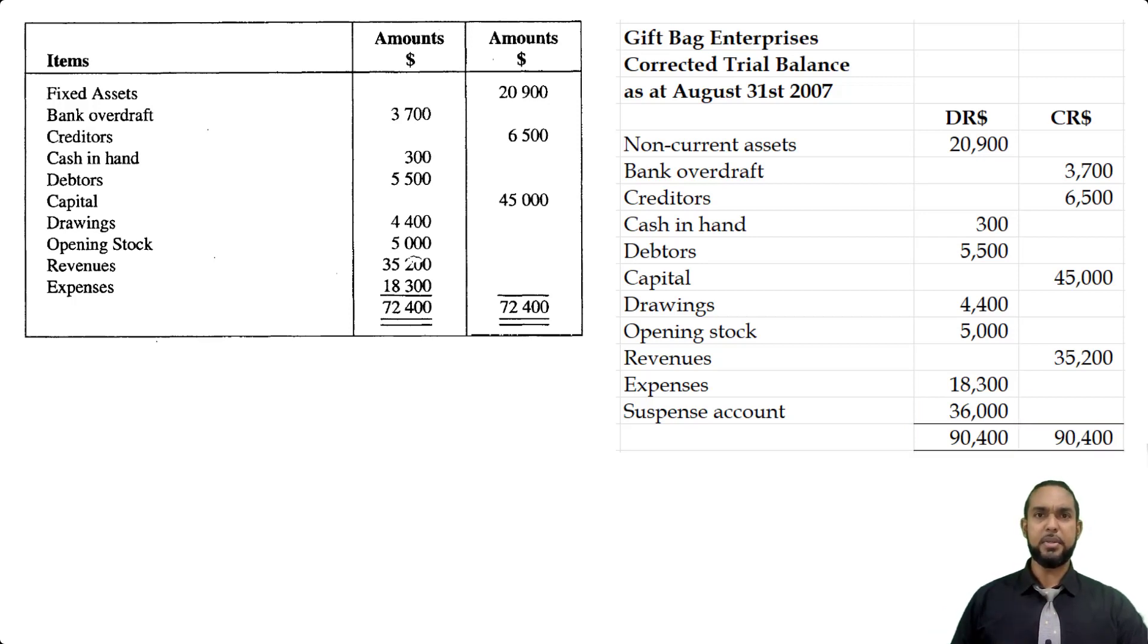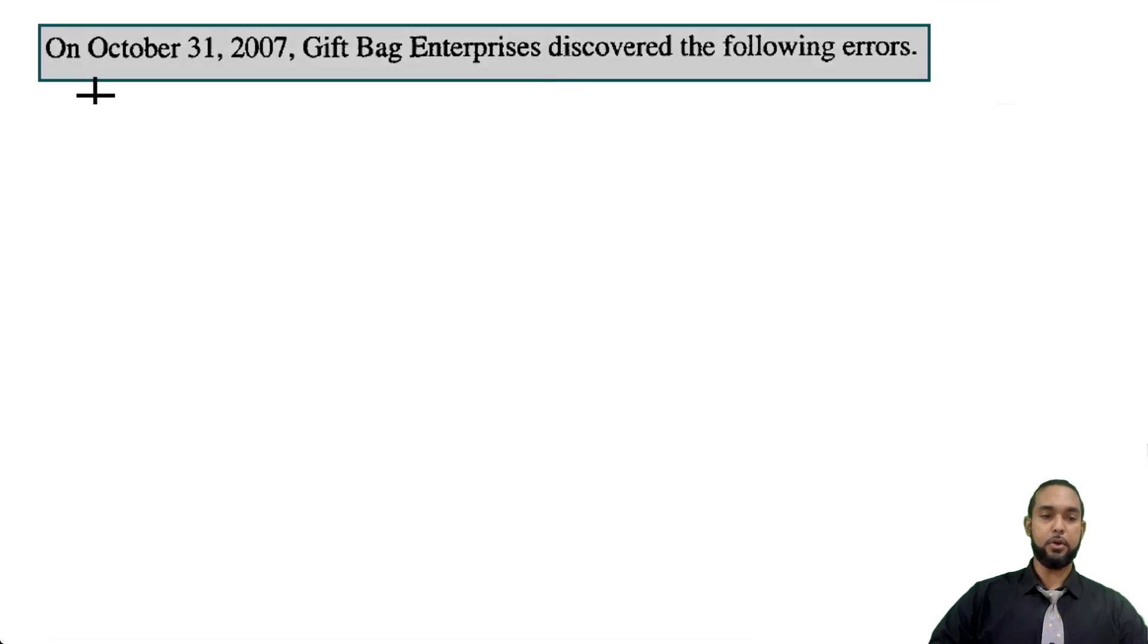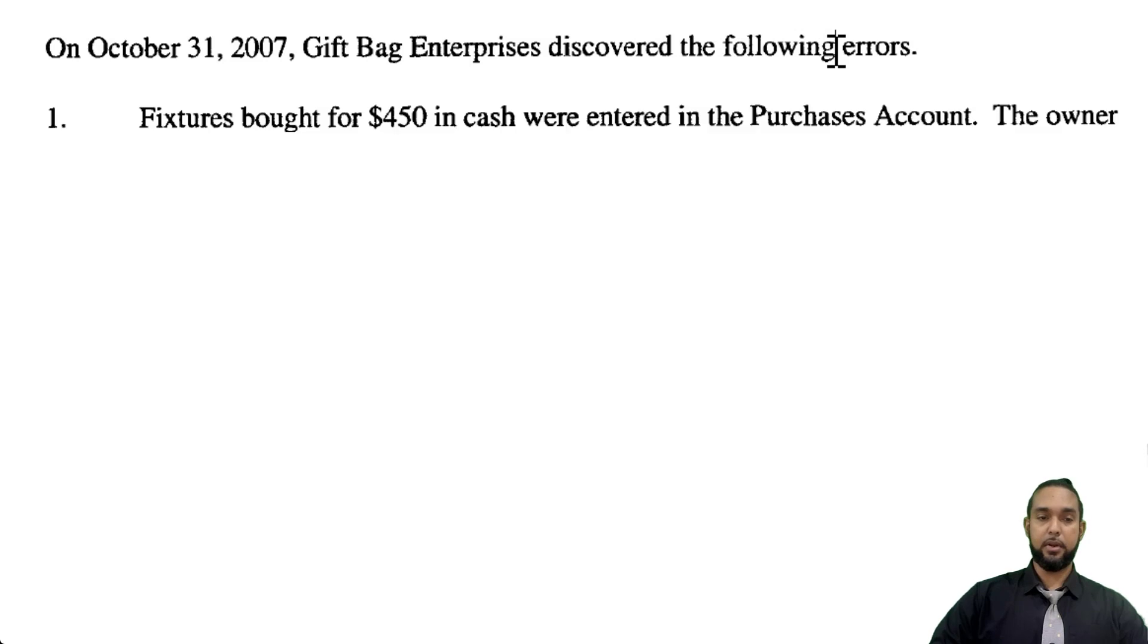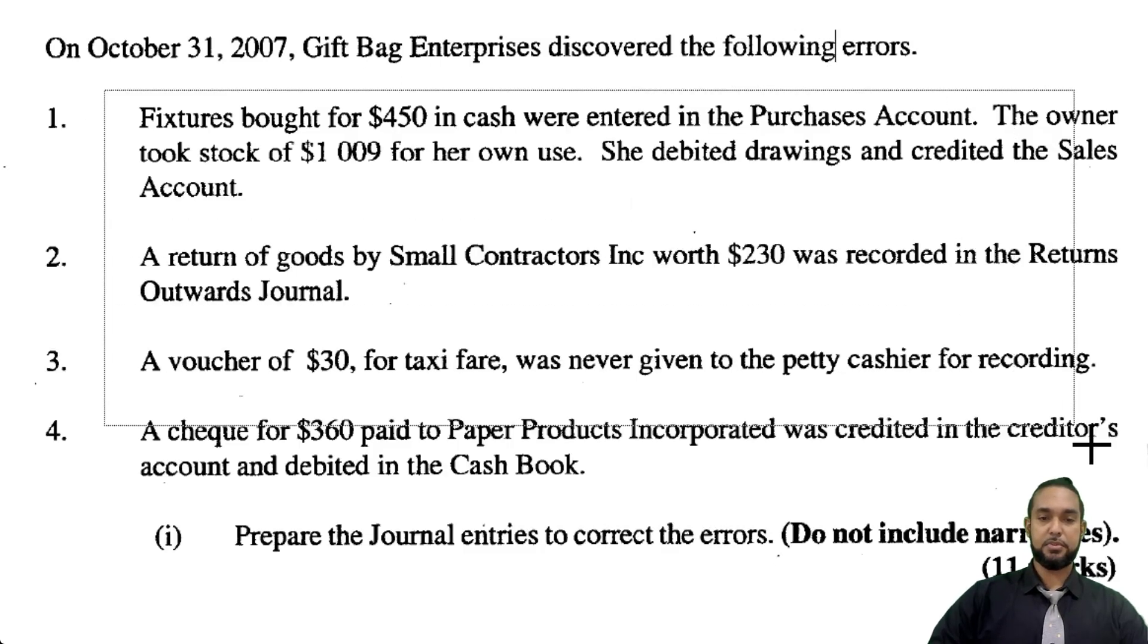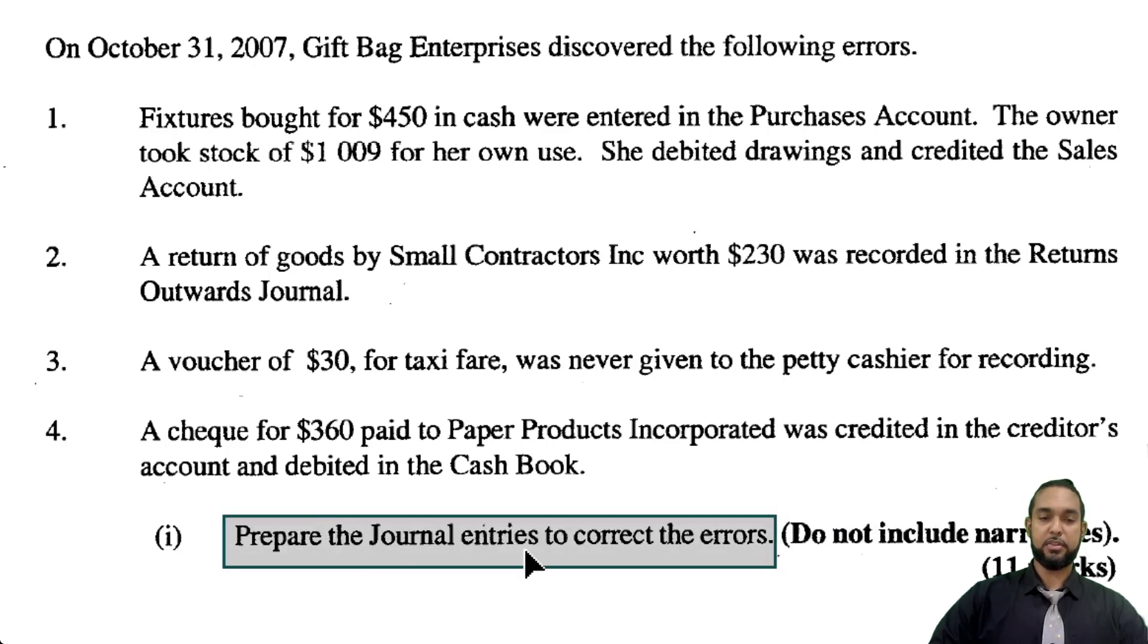Okay, cool. Let's take a look at part B. Okay, so they tell us in part B, on October 31st, 2007, gift back, discover the following errors. Okay, so they give us four errors. And they say prepare the journal entries to correct the errors, do not include narratives. I think I did just for the sake of practice.